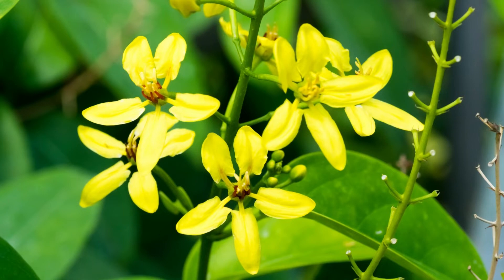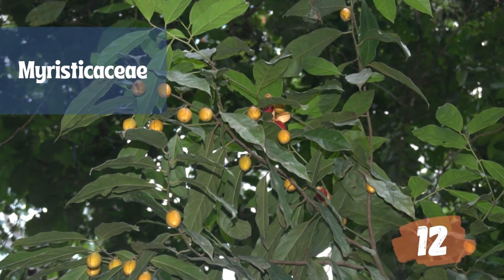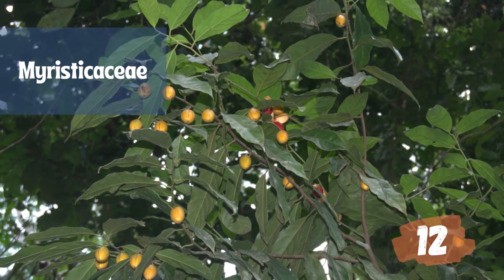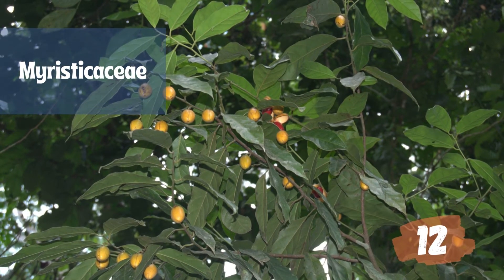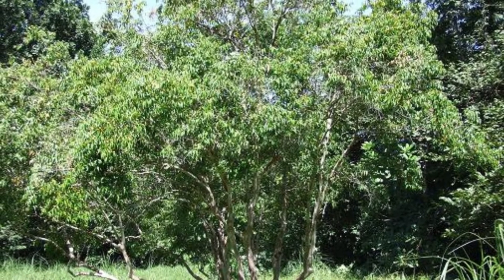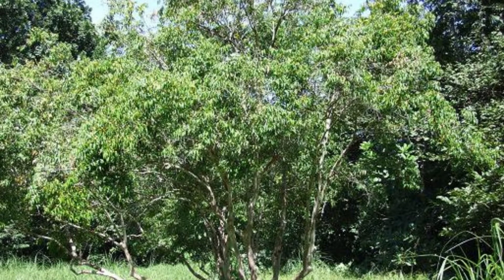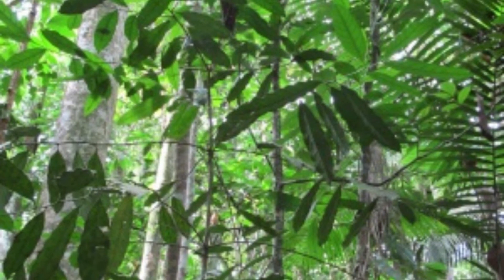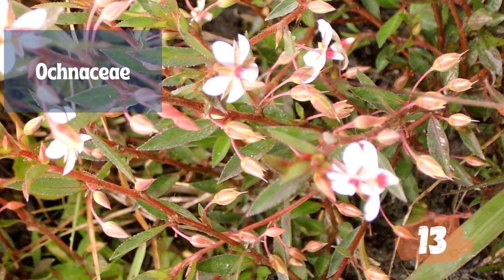The Myristicaceae are a family of flowering plants native to Africa, Asia, Pacific islands, and the Americas, sometimes called the nutmeg family after its most famous member Myristica fragrans, the source of the spices nutmeg and mace. The best known genera are Myristica in Asia and Virola in the neotropics. They are typically trees with reddish sap and distinctive pagoda-like growth known as Myristicaceous branching, where horizontal branching only occurs at certain nodes along the main axis of the trunk, each node separated by a large gap. All genera are dioecious except Endocomia and some Horsfieldia.